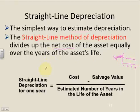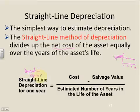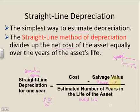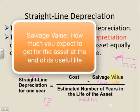There's a formula here I need you to remember. Straight line depreciation expense equals cost minus salvage value, divided by the estimated number of years in the life of the asset — I call this useful life. Sometimes we call salvage value residual value. It's how much you expect to get if you sold this asset at the end of its useful life.